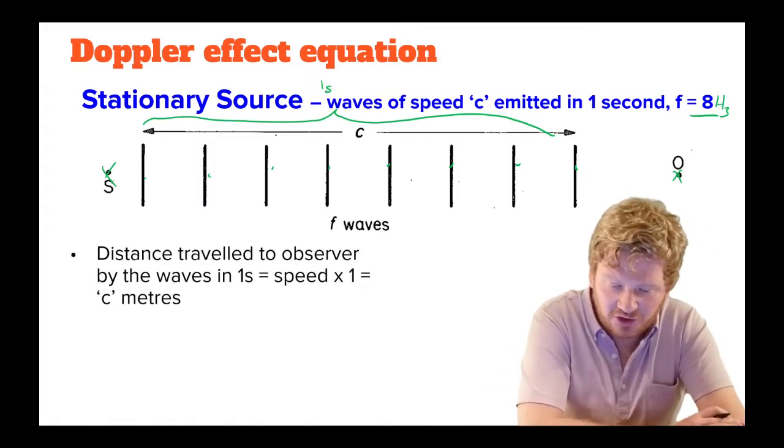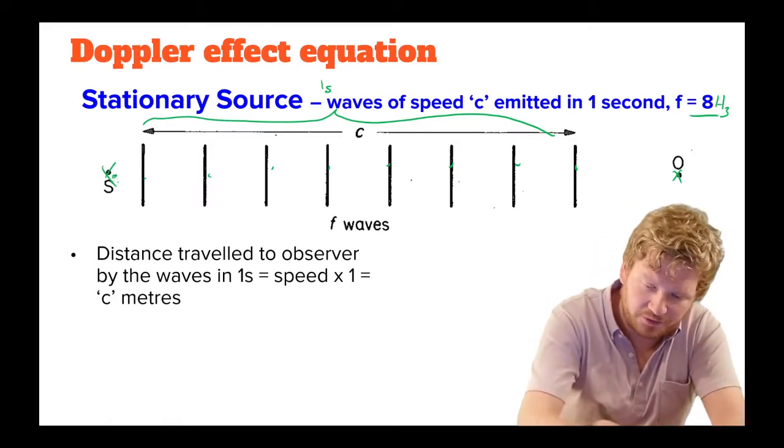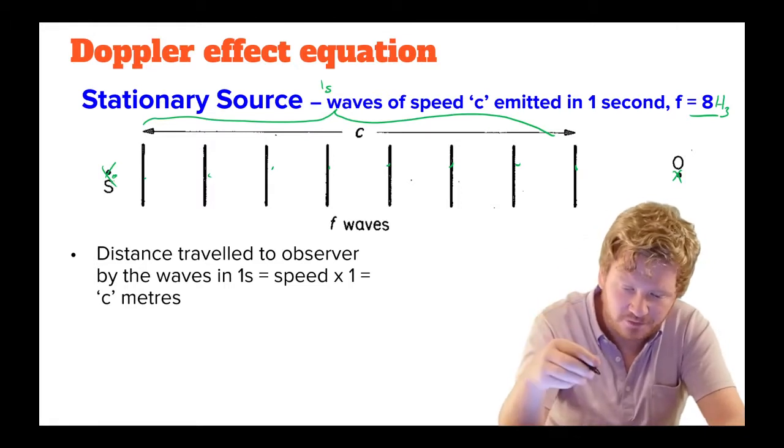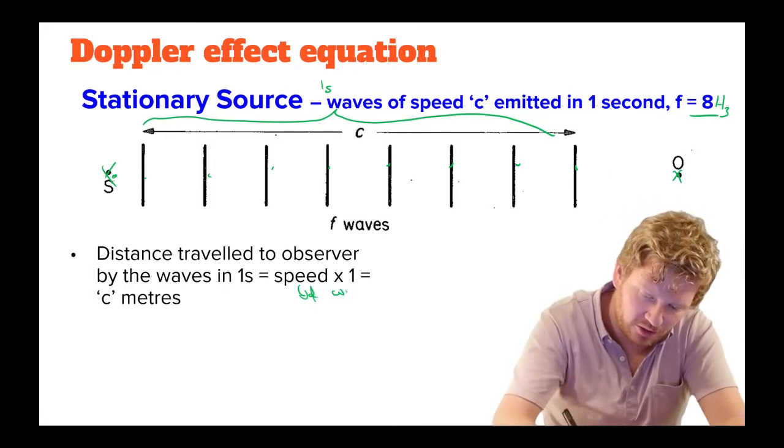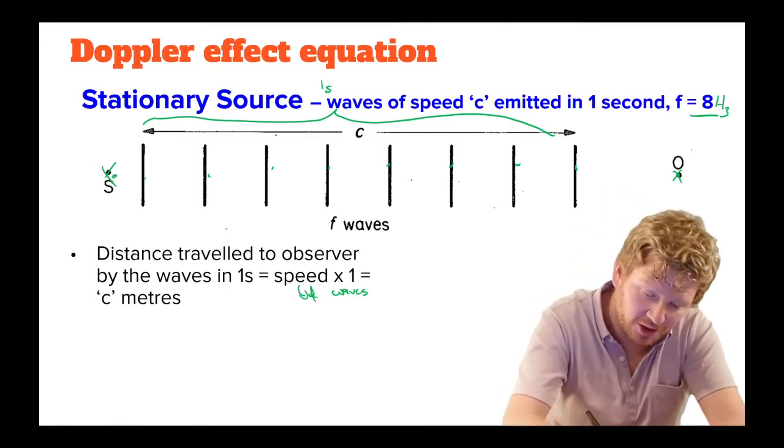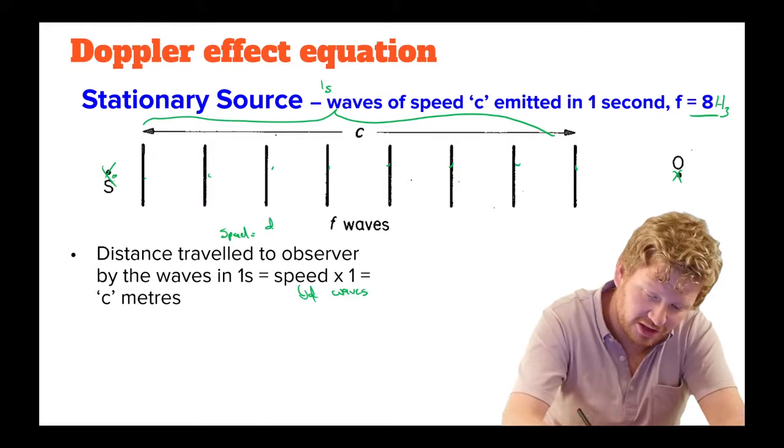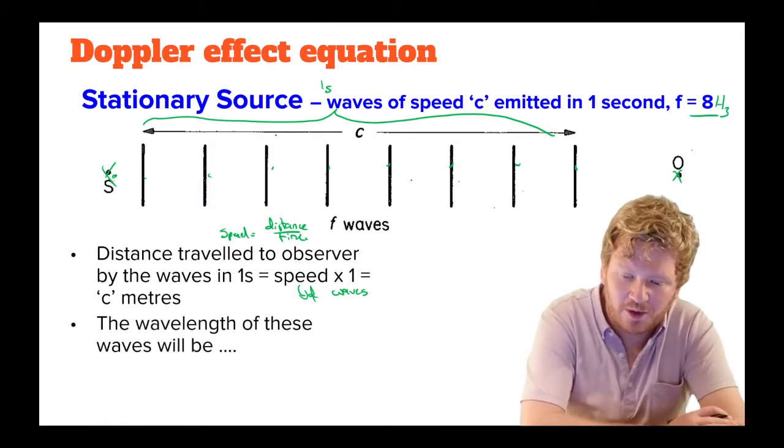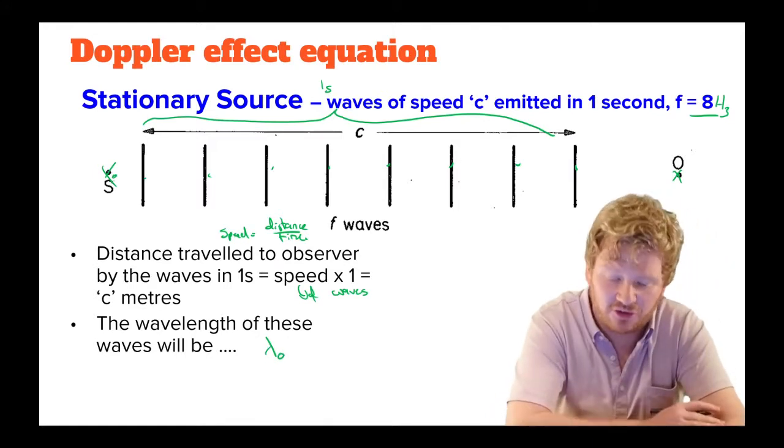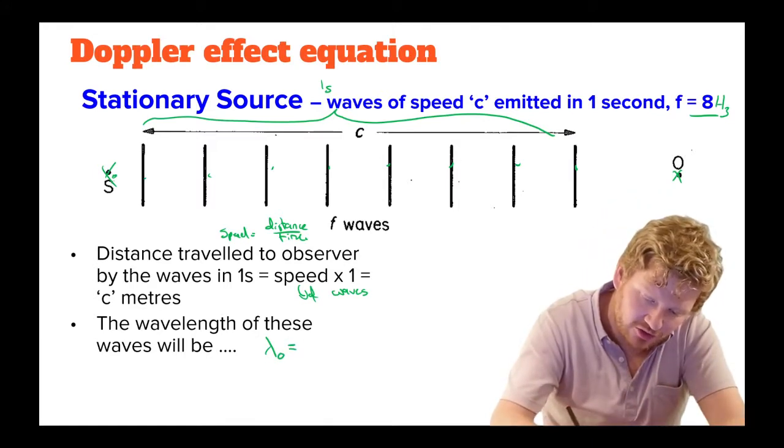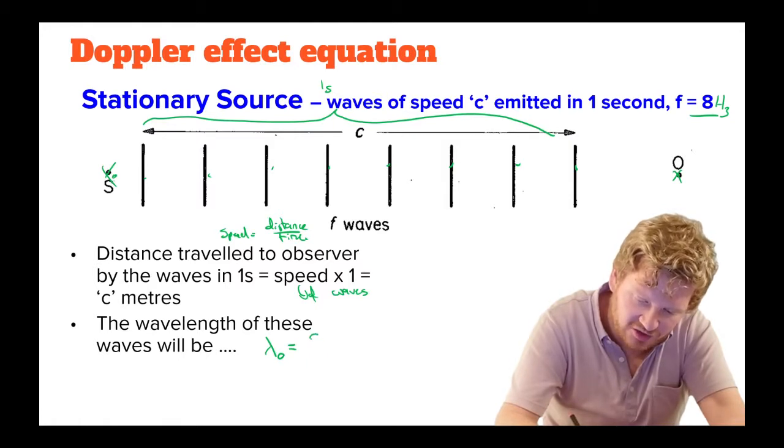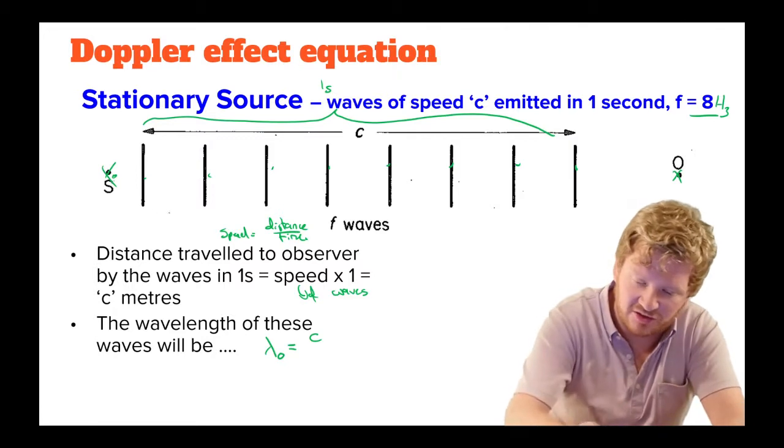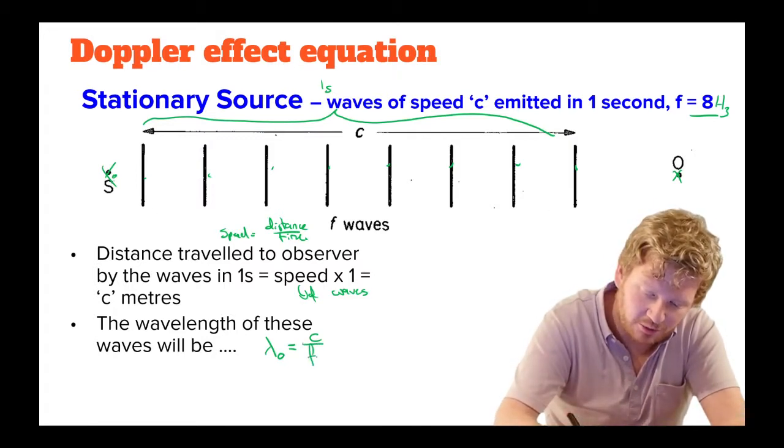Now, the distance from the source to the observer, in this case, in one second, will be the speed of the waves multiplied by one second. Because as we know, speed is distance over time. We've been learning that one since year seven. So that means that the wavelength, lambda naught, which I'm going to say is my initial wavelength, that is going to be my total distance, which is c, because c is the speed of my waves, so that would be the distance that they've traveled, divided by the number of waves, so c over f.